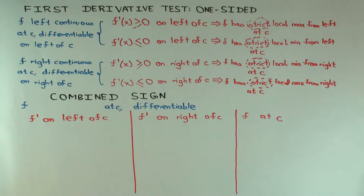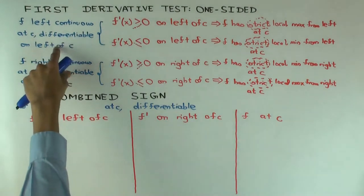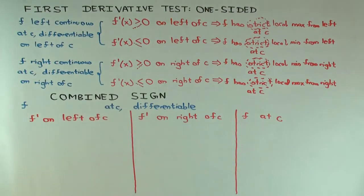So now we want to combine those assumptions. So what should be the assumption for f at c? If you want to do the two-sided thing, f should be? You have to combine these assumptions, right? So what should be the combined assumption?